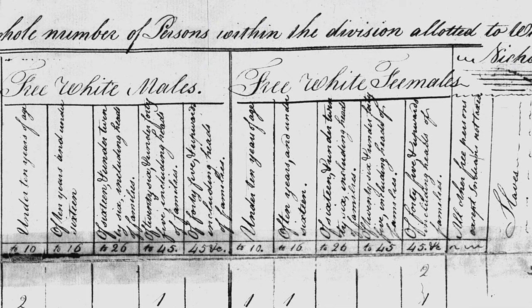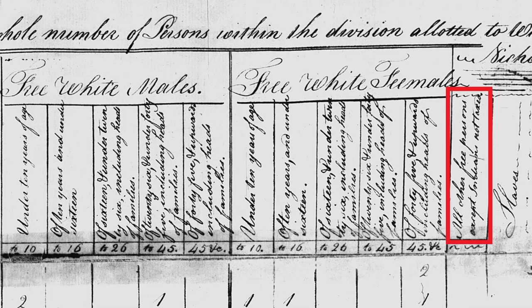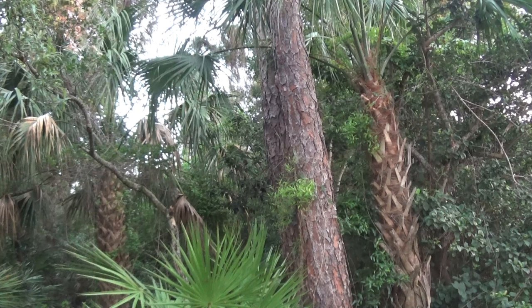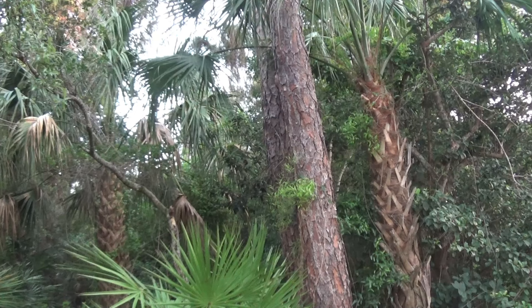The 1810 census tabulated the number of free whites, other free persons, and slaves. Other free persons is recognized as generally revealing the number of free African Americans. The age and gender of free whites is accounted for in detail. The census is required to tabulate the distinction between free and slave residents in each state to compute the state's representation in Congress.